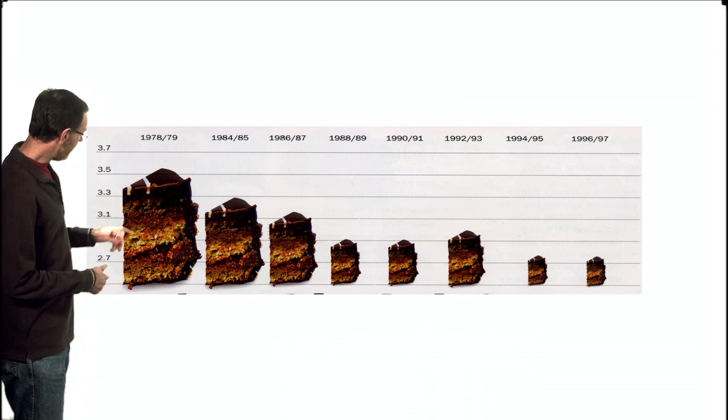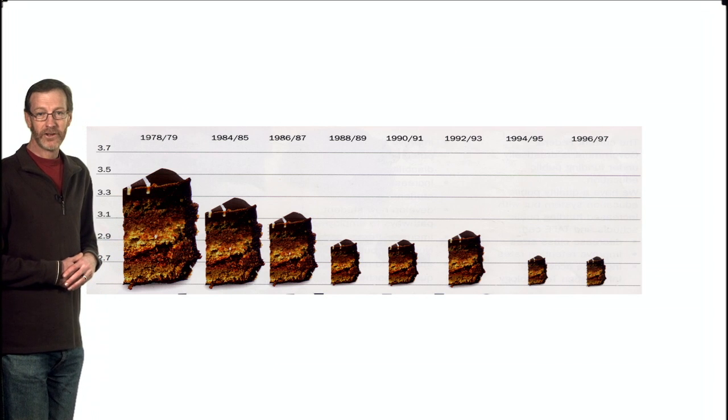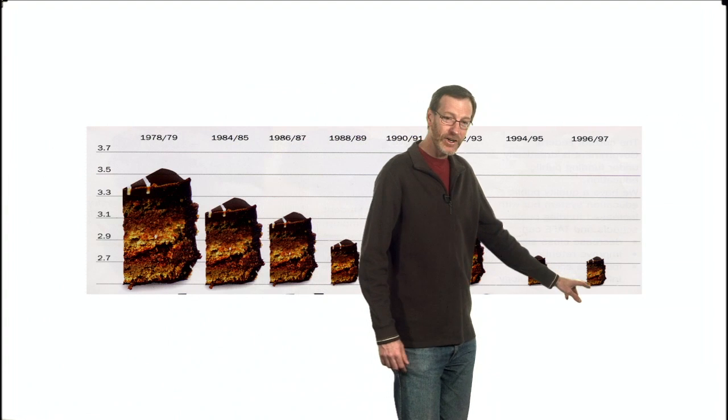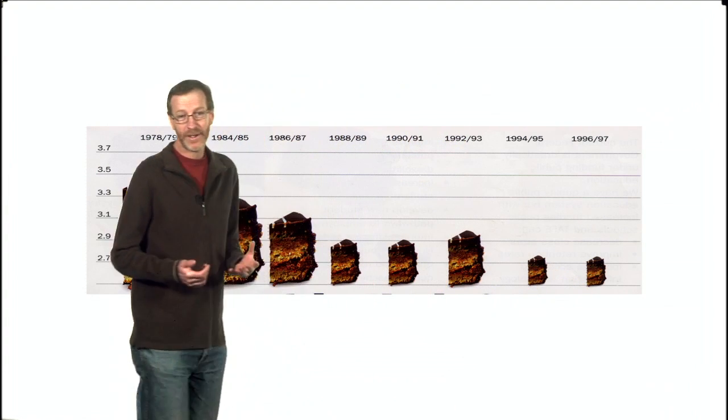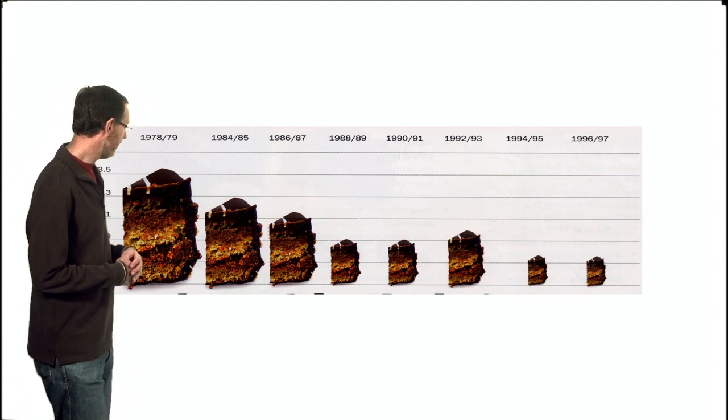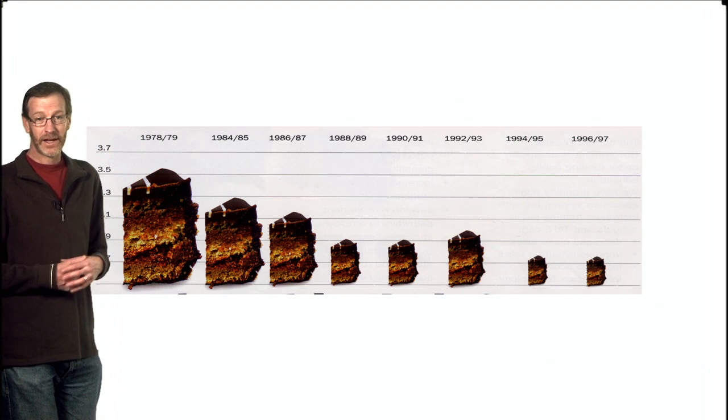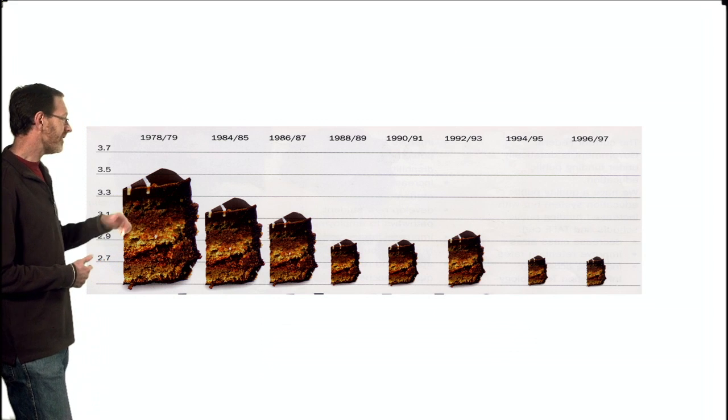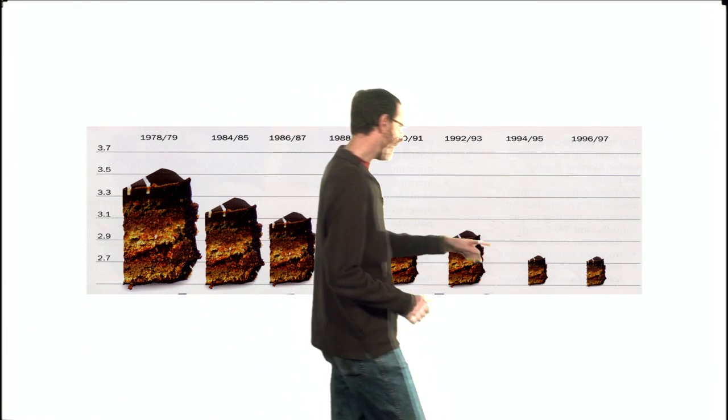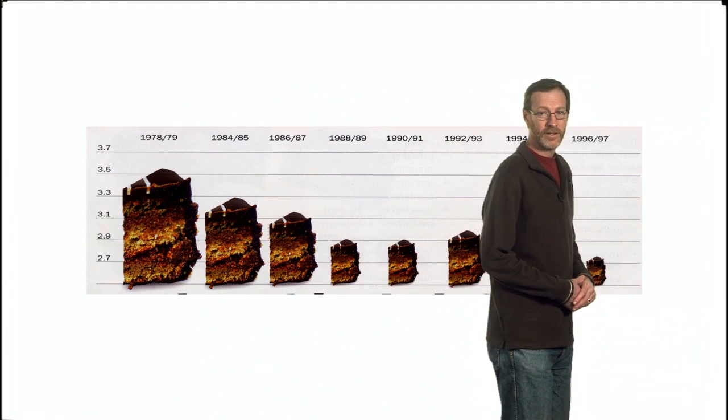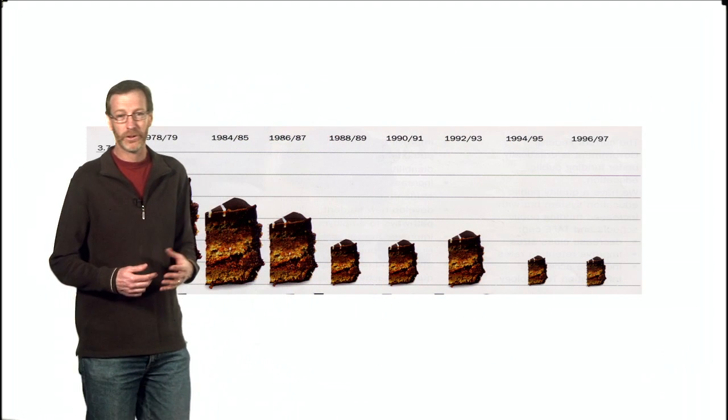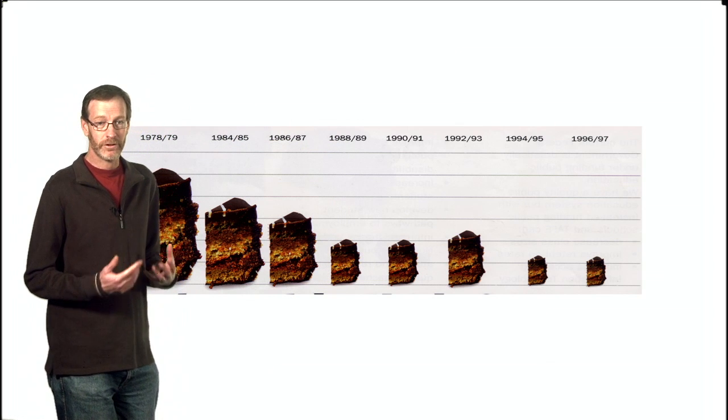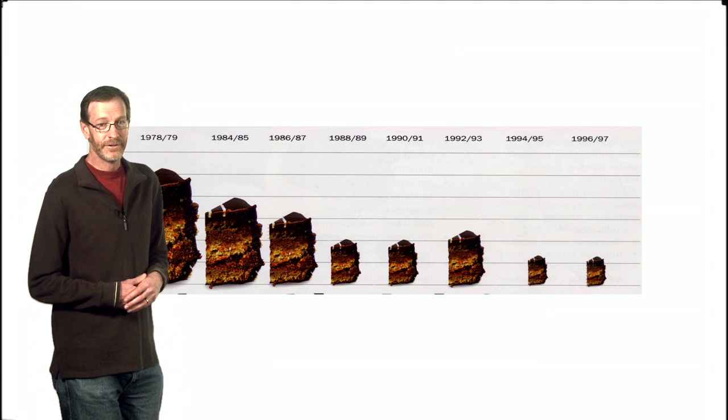But one thing you'll notice is that this bar here, which is a nice 3D picture of a piece of cake, looks for all the world, well, maybe 50 times bigger than this piece of cake here. I certainly know which piece of cake I'd rather have, at least if I was hungry. The truth, of course, is very different. If these pieces of cake were being given to you based on the numbers, you might not be so keen. This piece of cake here sits at about 3.5. This piece of cake here sits at about 2.7. The ratio of 3.5 to 2.7 is about 4 to 3. One and a third. Not 50. But 50 is what your eyes tell you. So this is truly a feast for your eyes.